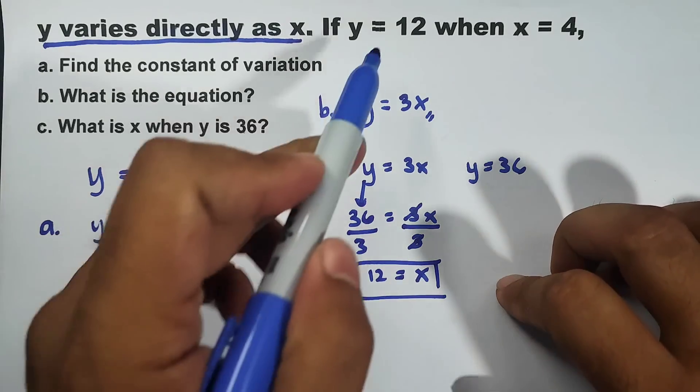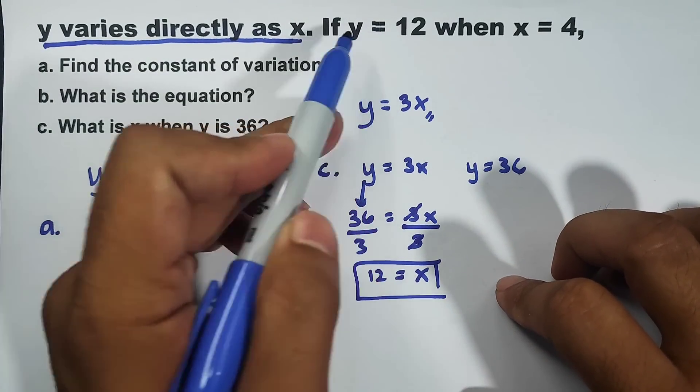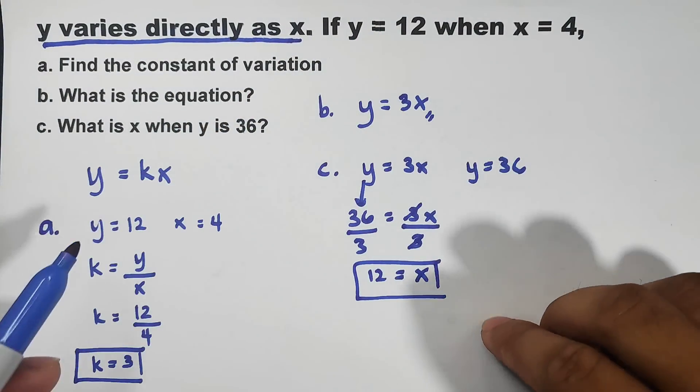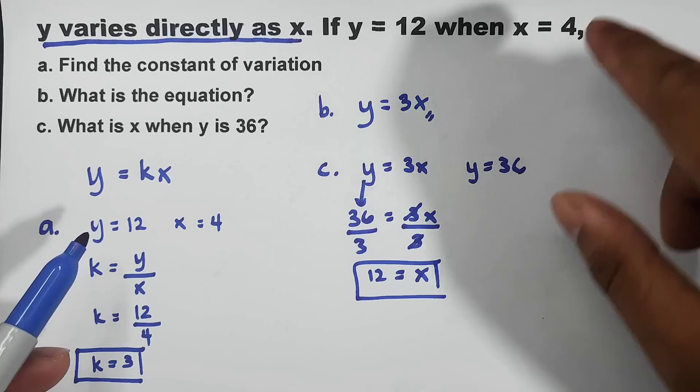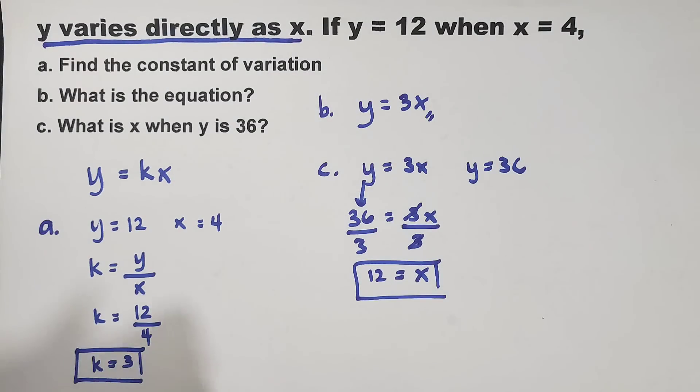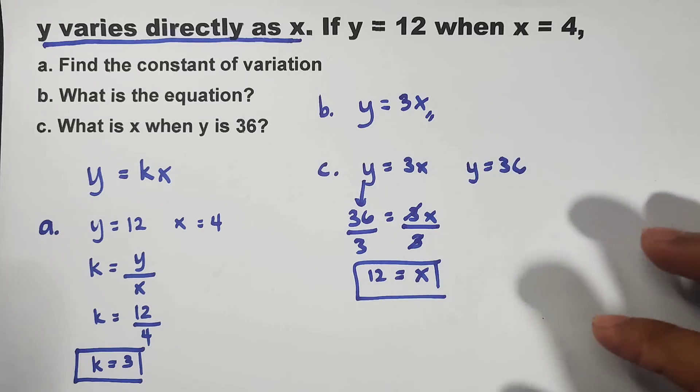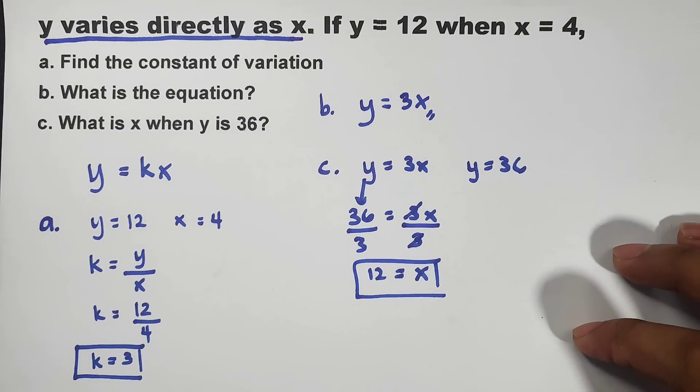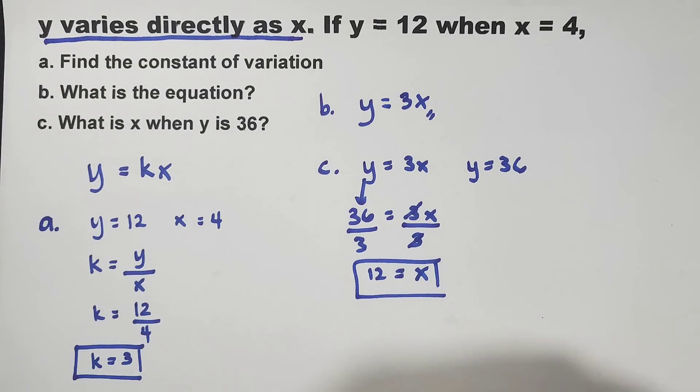Let's check. From y equals 12, it became 36, increasing. From x which is 4, it became 12. So, another increasing value. So, I hope guys you learned something from this video. For this example, let's have the second example.